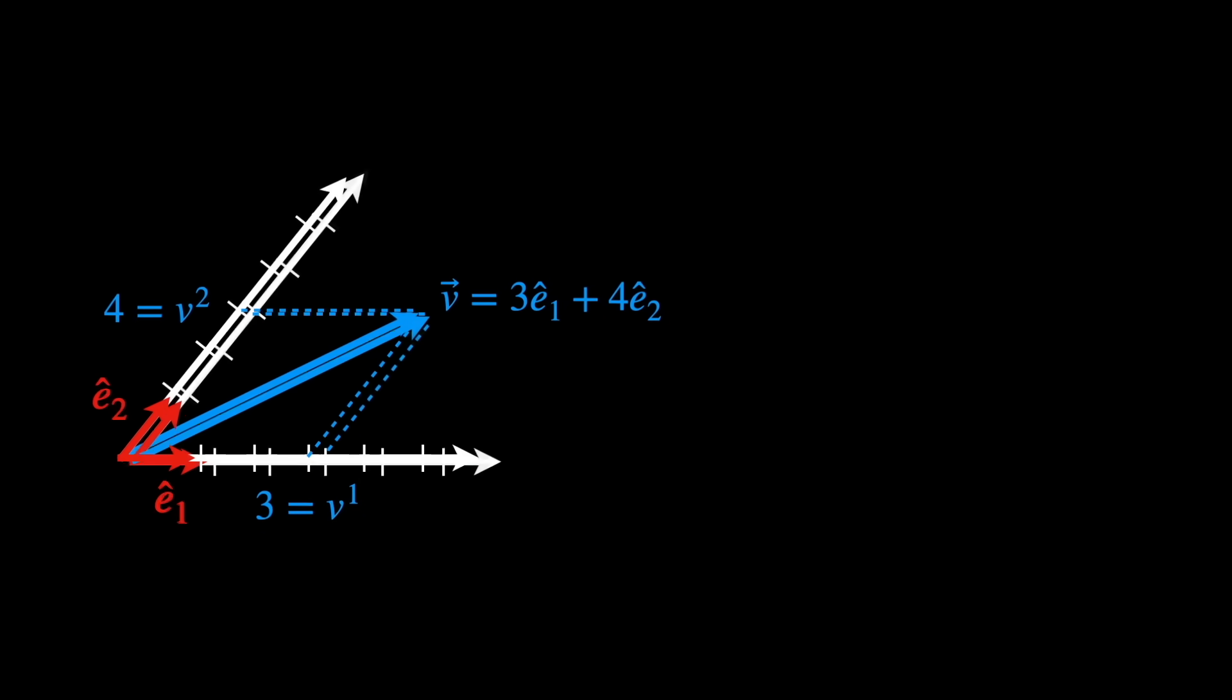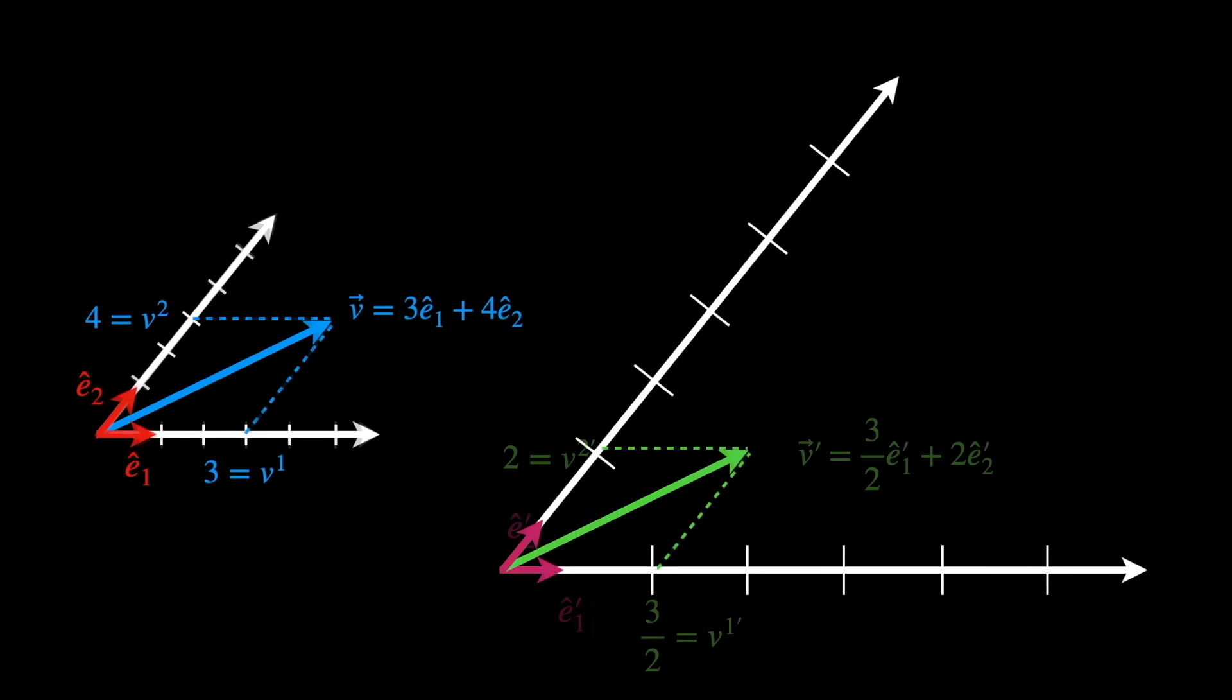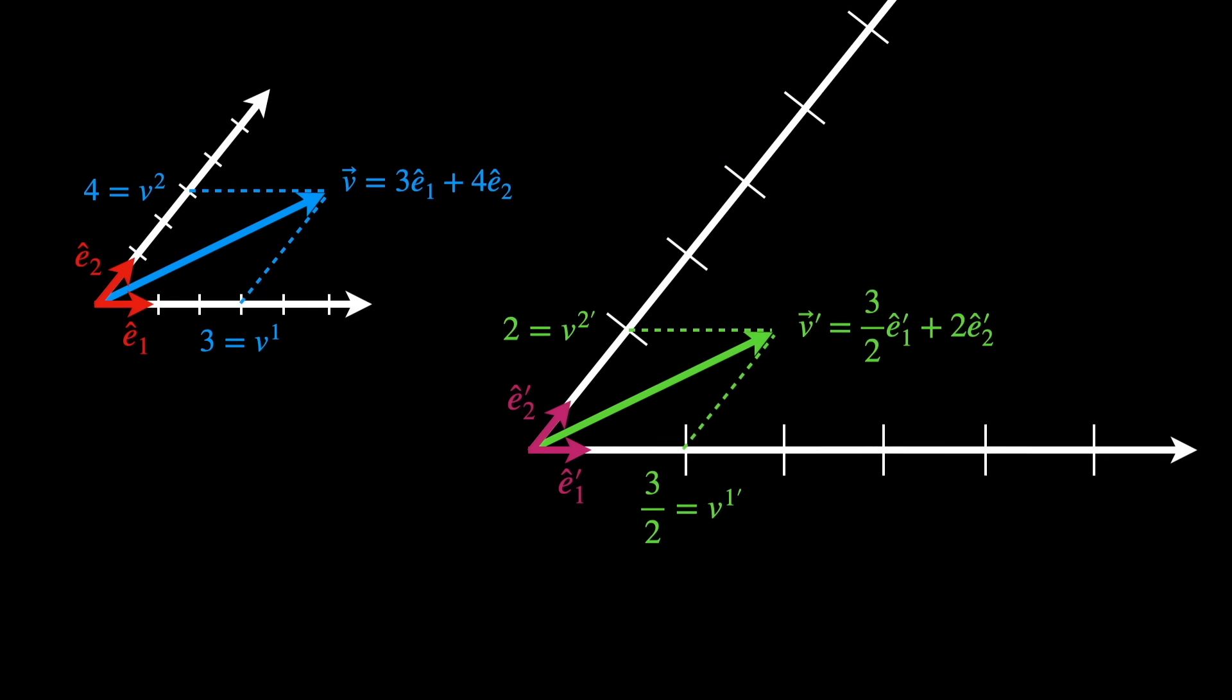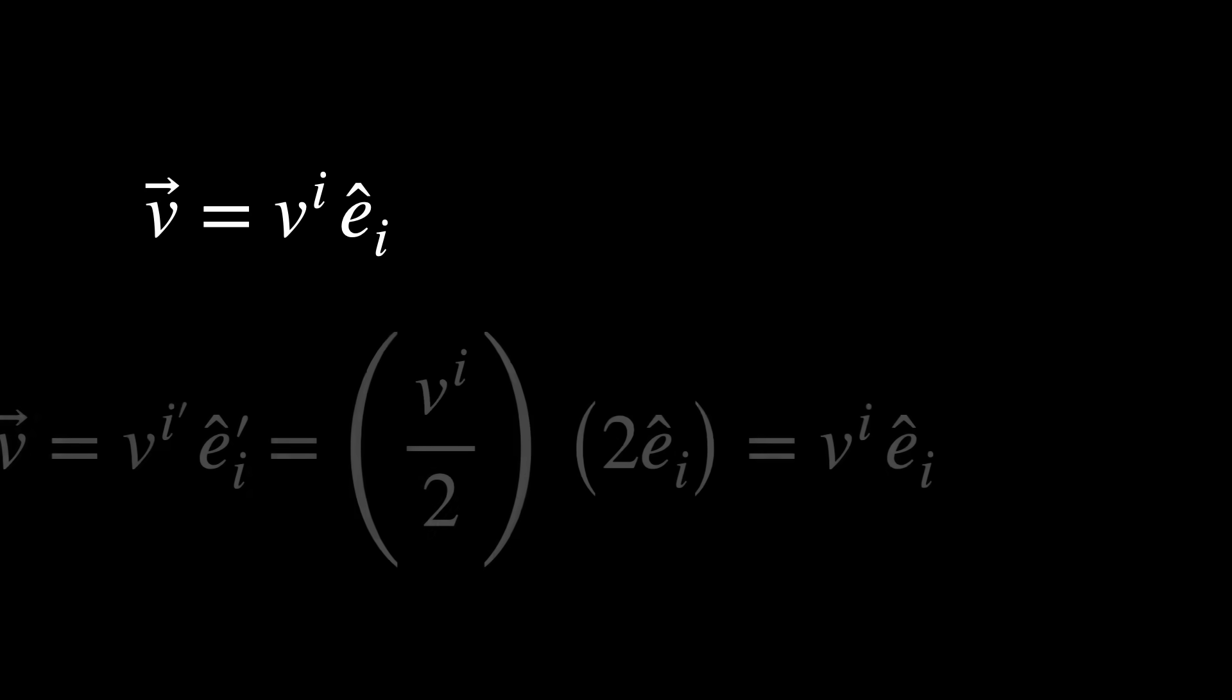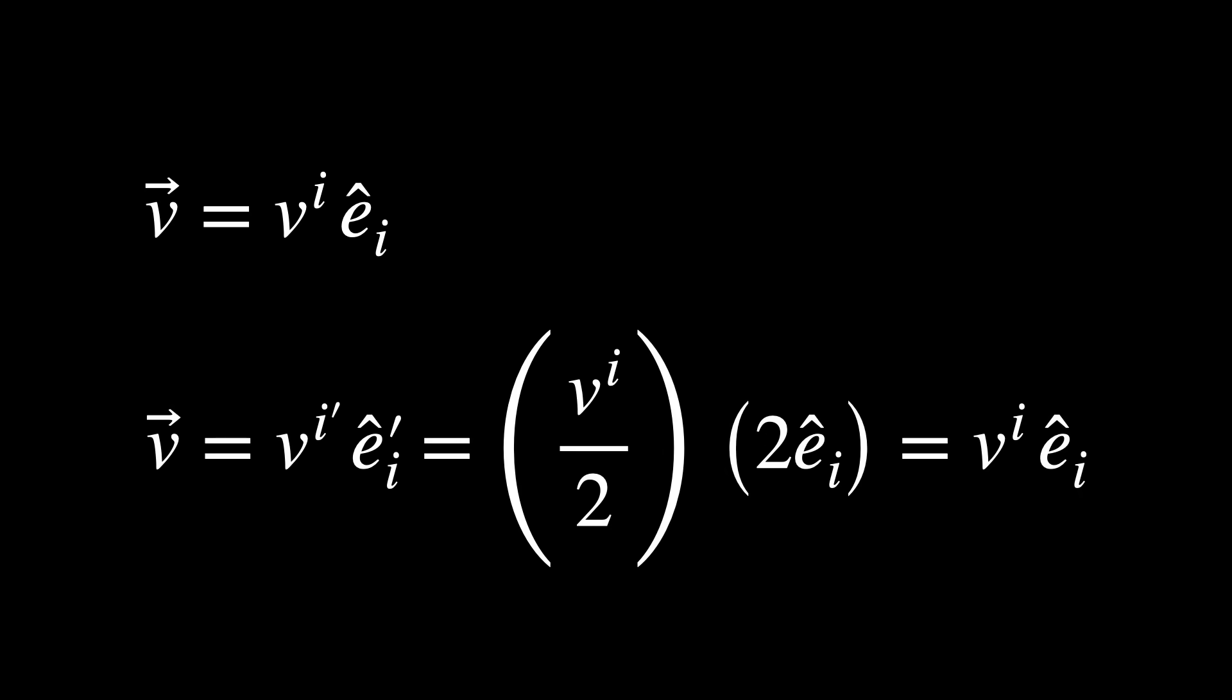So for example, say that the basis axis are scaled by a factor of 2. Then the components, v¹ and v², will be scaled inversely. In other words, by a factor of a half. So, they transform opposite to the basis. This keeps the contravariant vector invariant. Great.